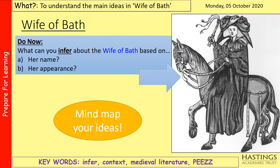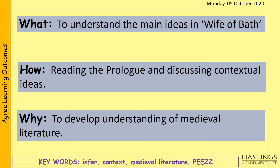This lesson is about the Wife of Bath and you've got a picture of her there on the right hand side. For your Do Now, I just want you to answer the question: what can you infer about the Wife of Bath based on her name and her appearance? What do those things convey about her and her character? Take five minutes now jotting down some ideas, and once you've done that, we'll move on.